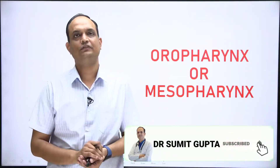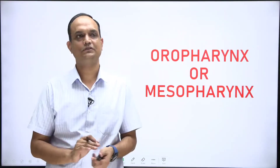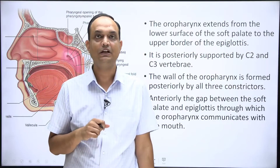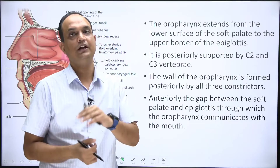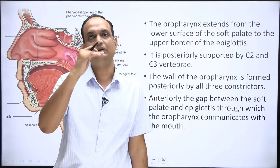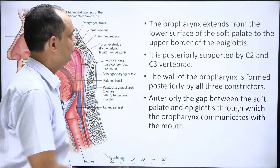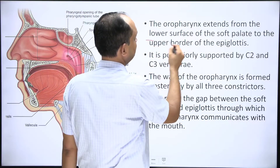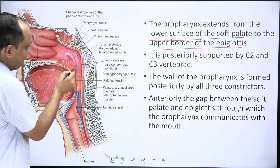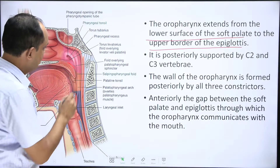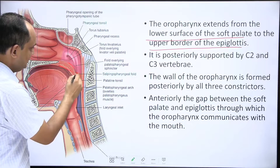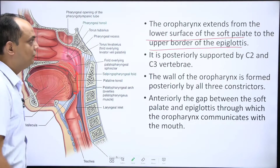In the continuation of the pharyngeal lectures, today we will talk about the features of the oropharynx, also known as mesopharynx. In the last class we discussed the nasopharynx, which communicates with the oropharynx in the lower part through the pharyngeal isthmus. The oropharynx extends from the lower surface of the soft palate to the upper border of the epiglottis, and is the common passage for both air and food.